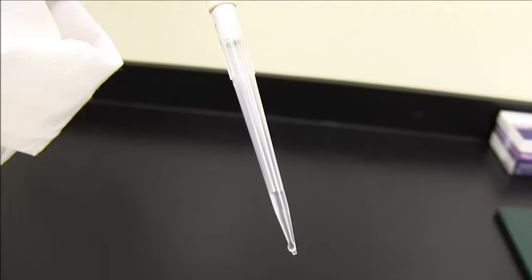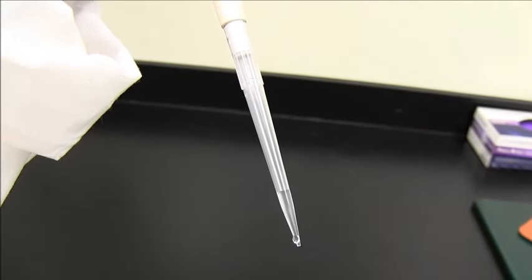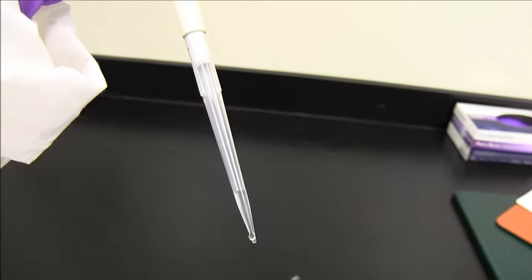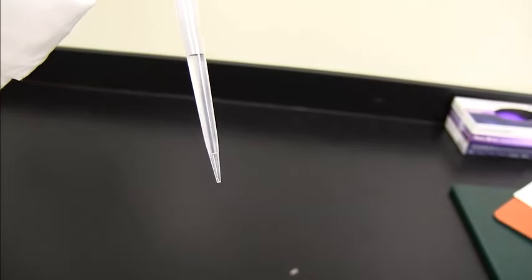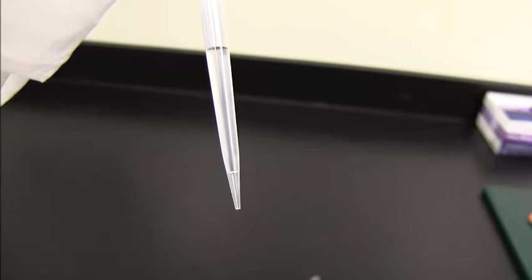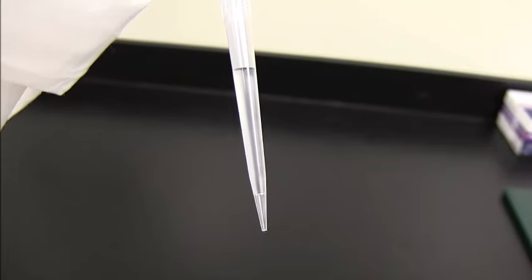When you're getting your volume, sometimes some water can be stuck to the outside of the pipetter. And this can actually throw off our reading. So when this happens, all we do is we take a chem wipe and wipe the tip off. And now we're good to go. Also, sometimes when you're getting the volume, you'll see a little bubble in the tip. You see how the water doesn't go all the way down to the tip. And this is going to also throw off your volume. So when this happens, we just need to take all the water out of the pipette tip and start over again.